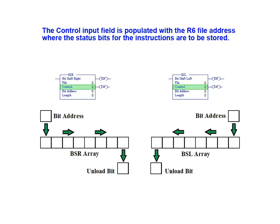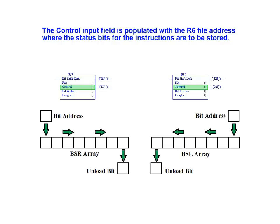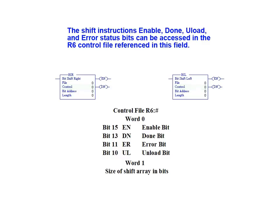The control input field is populated with the R6 file address where the status bits for these instructions are to be stored. The shift instruction's enable, done, unload, and error status bits can be accessed in the R6 control file referenced in this field. The bit address field is populated with the source location for the bit being shifted into each of these register instructions.